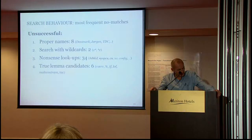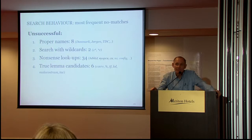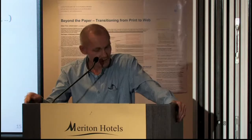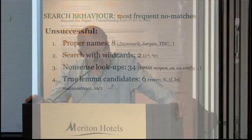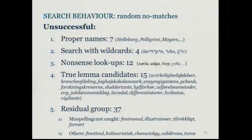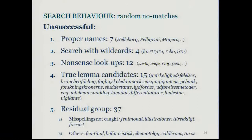A few no-matches are more or less true candidates for inclusion in the dictionary — for instance, the percent symbol, which is already in the entry for the word 'percent.' Lol — laughing out loud — is a good example of a neologism. On the whole, we think it's quite reassuring because so few of the no-matches can be seen as good candidates for new entries. Looking at randomly selected no-matches, we still get proper names, which might encourage us to change our policy and include proper names. We still get wildcard searches — more complex ones may suggest not only Word Feud but also crossword puzzles. We still get nonsense lookups, pointing to hacker attacks.